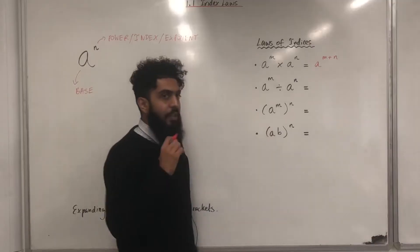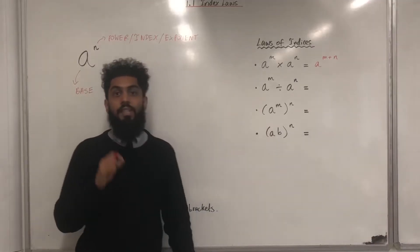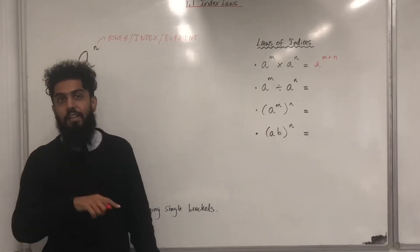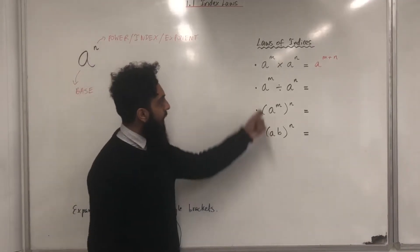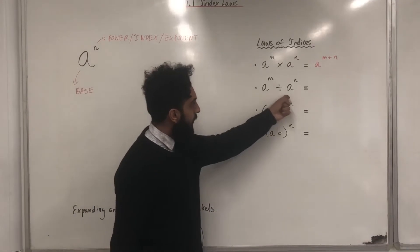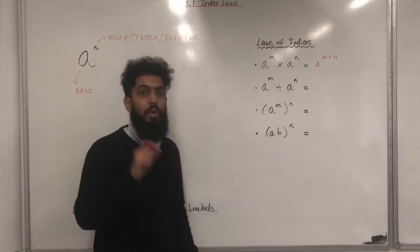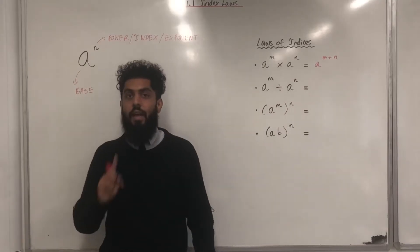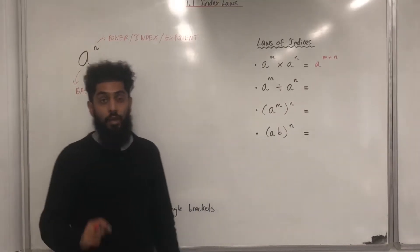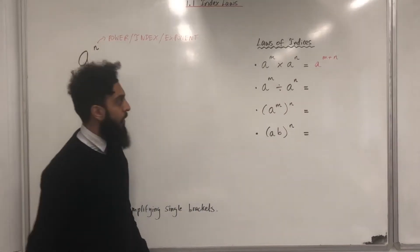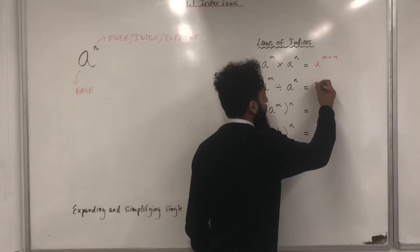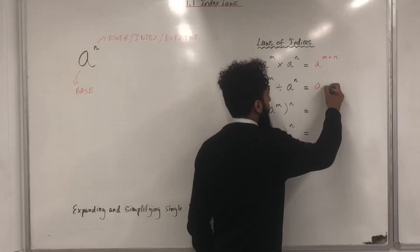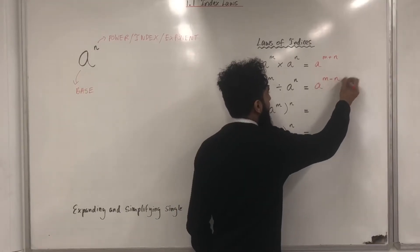The second one: A to the power N divided by A to the power N. Again, we have the same base, but this time we are dividing, hence we need to subtract the powers, giving us A to the power N minus N.